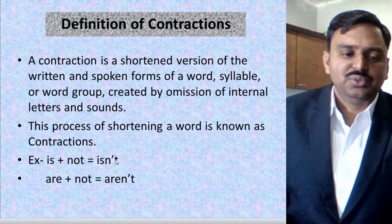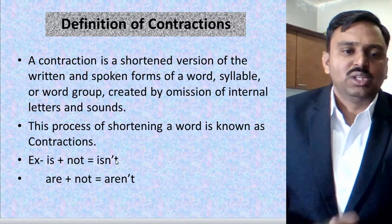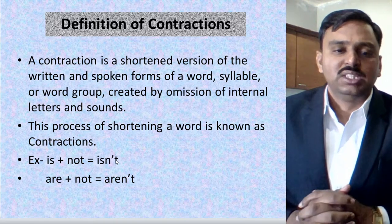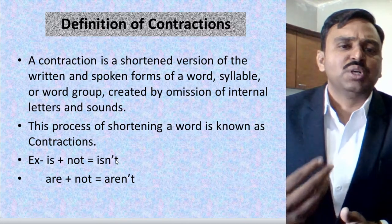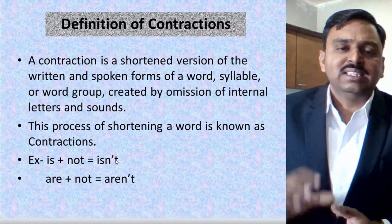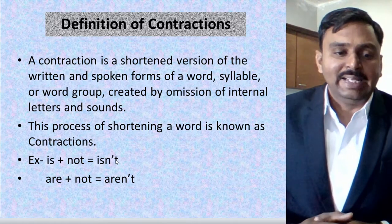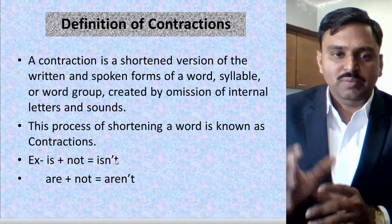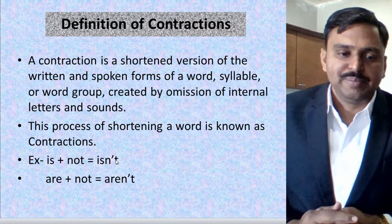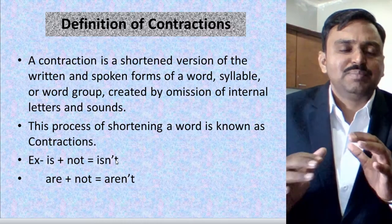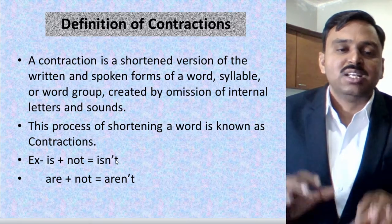You can see just in front of you some definitions of contractions. A contraction is a shortened version of written and spoken forms of a word, syllable, or a group of words. All contractions are created by omission — that is, by removing internal letters and sounds. In simple words, the process of shortening a word is known as contraction.